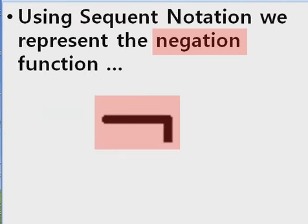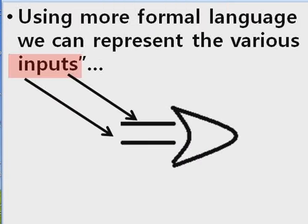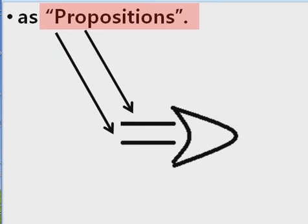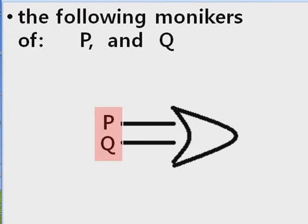Using sequent notation, we represent the negation function via this complement symbol. Using more formal language, we can represent the various inputs as propositions. We can assign the two propositions the following monikers of P and Q.